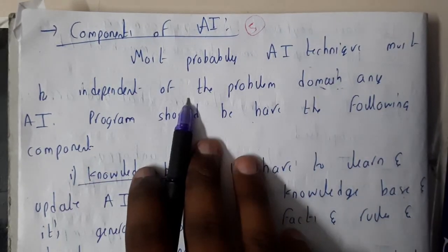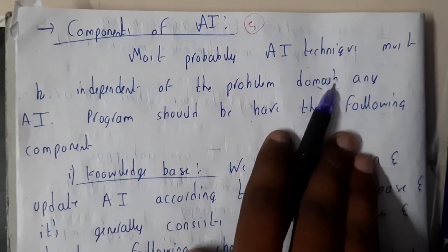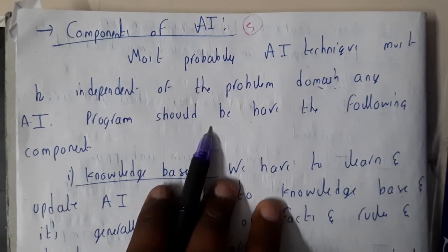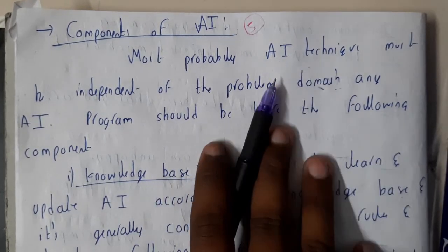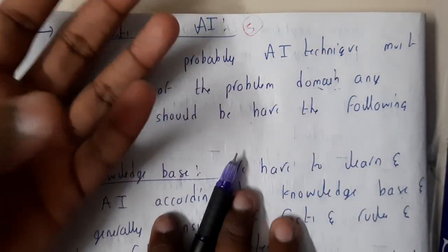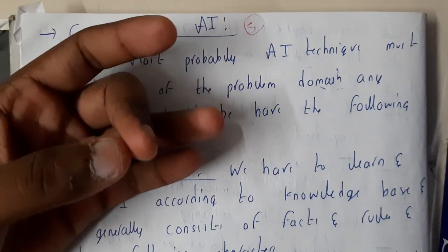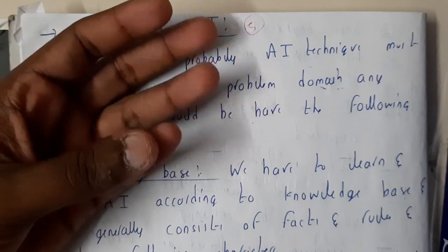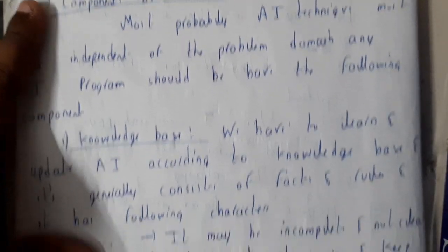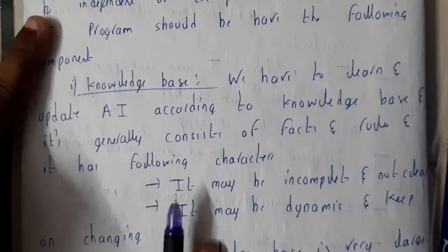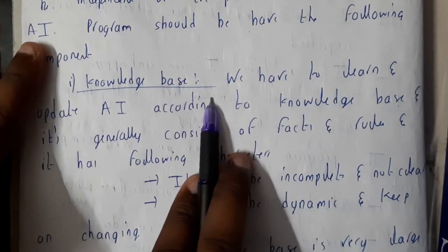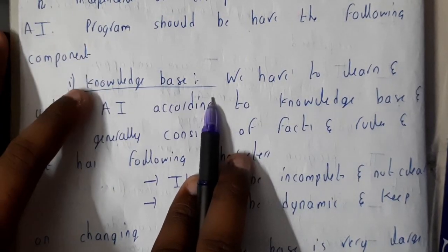An AI technique must be independent of the problem domain. Any AI program should follow three important components: knowledge base, control strategy, and inference mechanism. These are the three concepts that any kind of AI works with or uses.